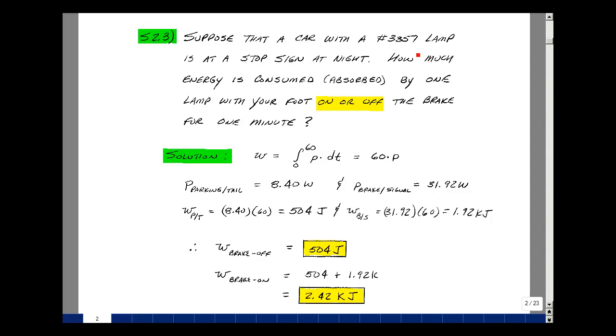Suppose that a car has a 3357 lamp and is at a stop sign at night. How much energy is consumed by one lamp with your foot on the brake and your foot off the brake for one minute?